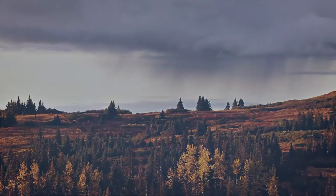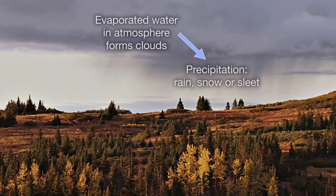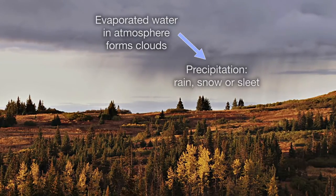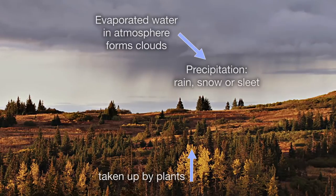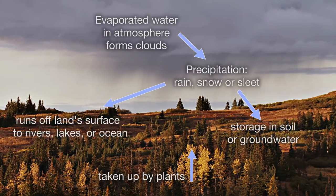Evaporated water in the atmosphere condenses into clouds. Water returns to the Earth as precipitation, for example, rain and snow. Precipitation falling on land is taken up by plants, runs off along the land surface, or percolates into the soil and enters the groundwater.